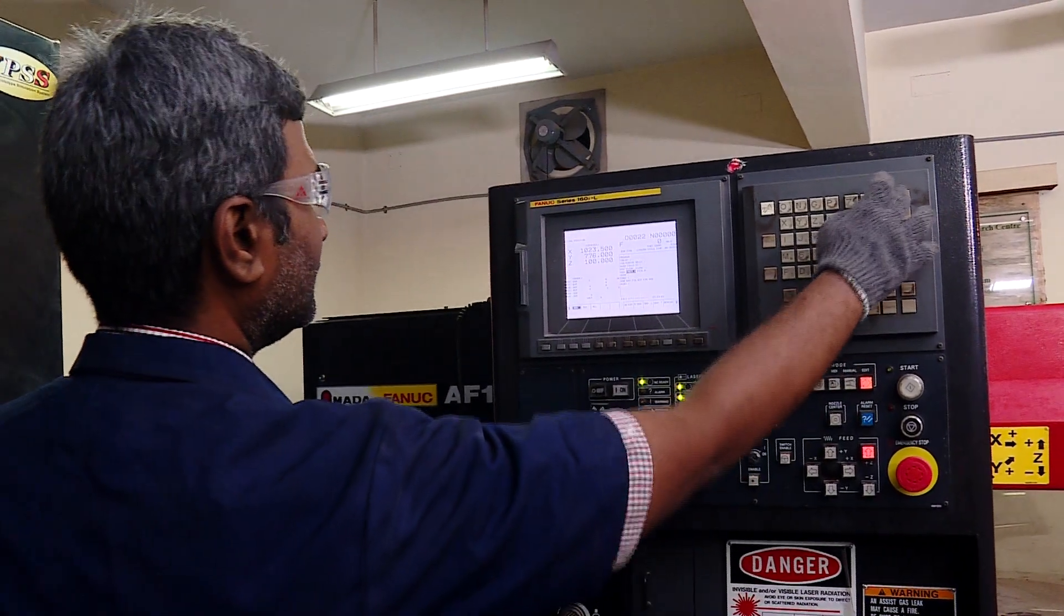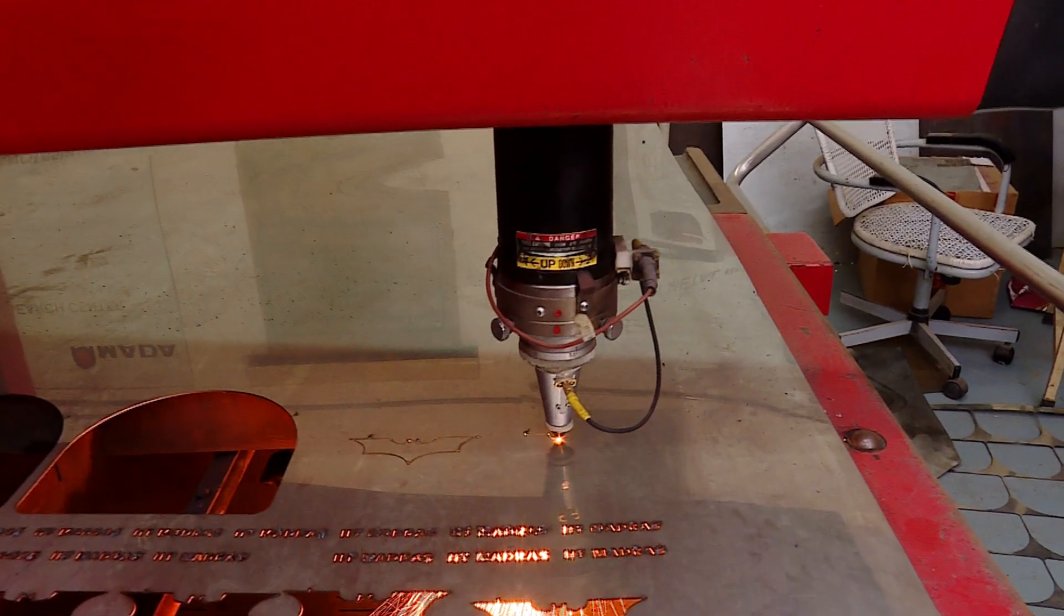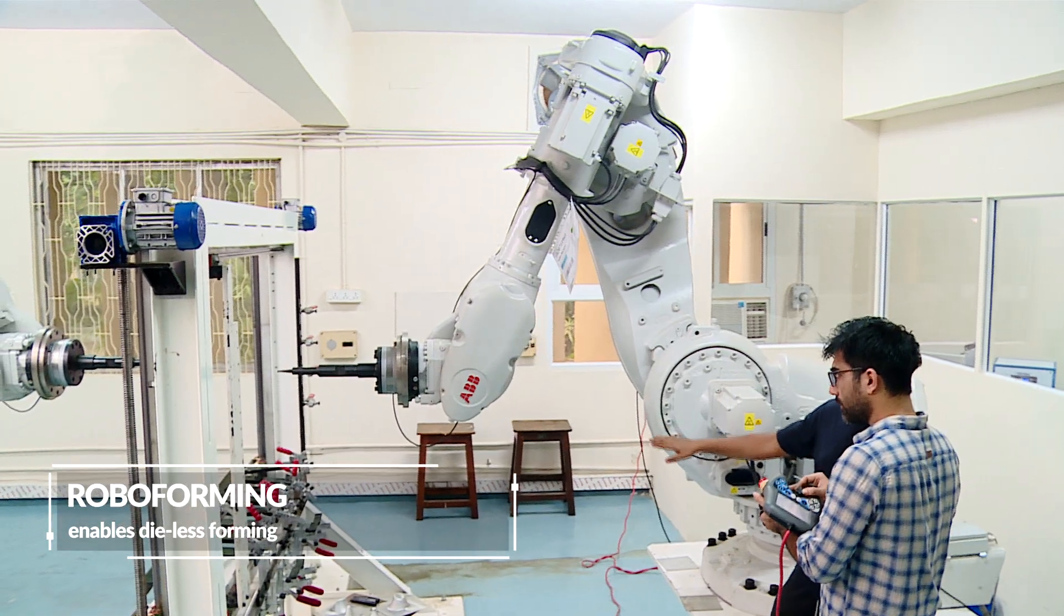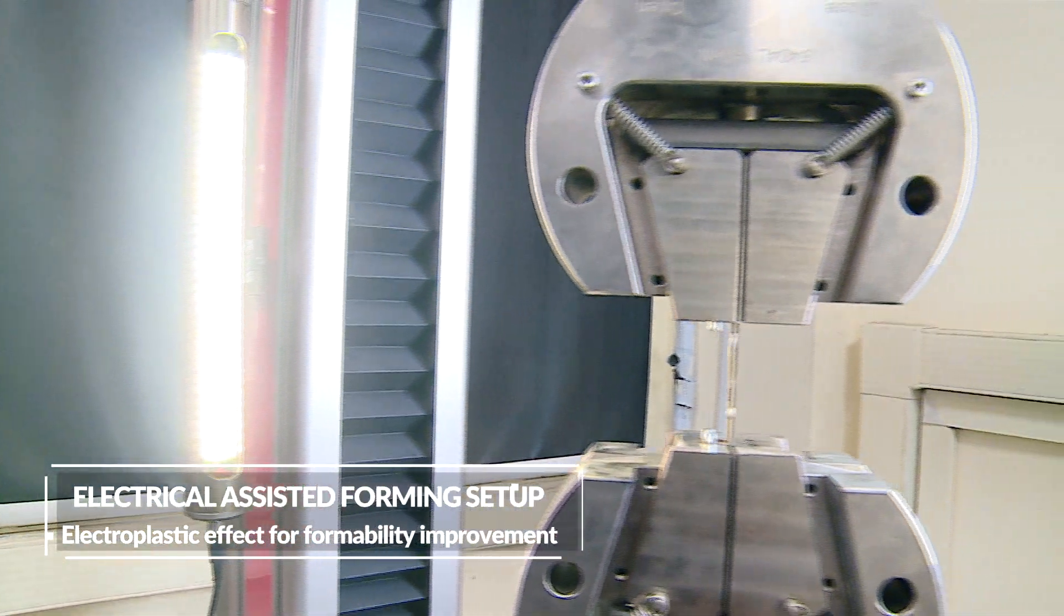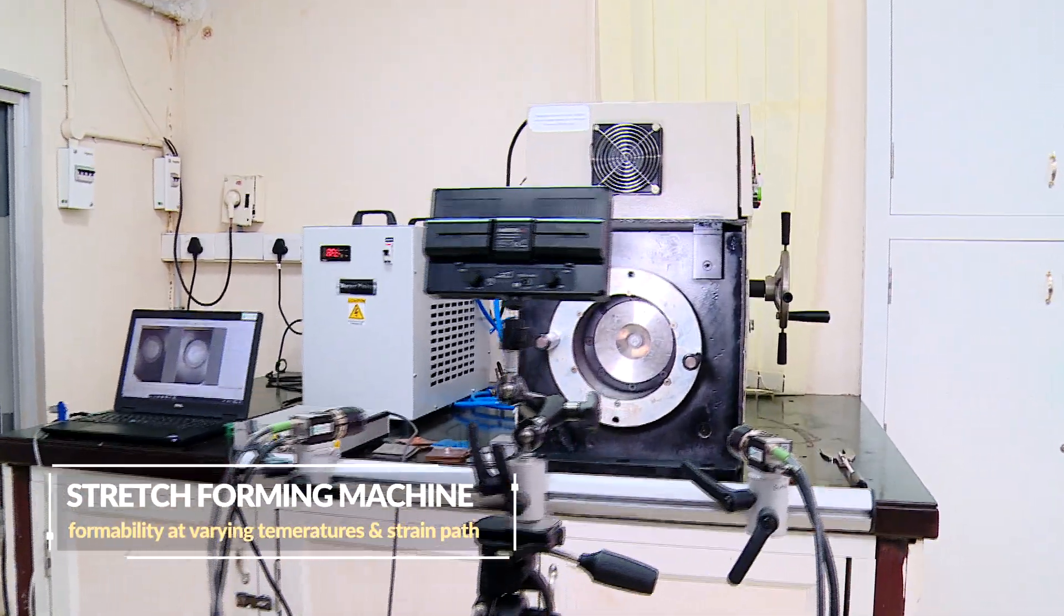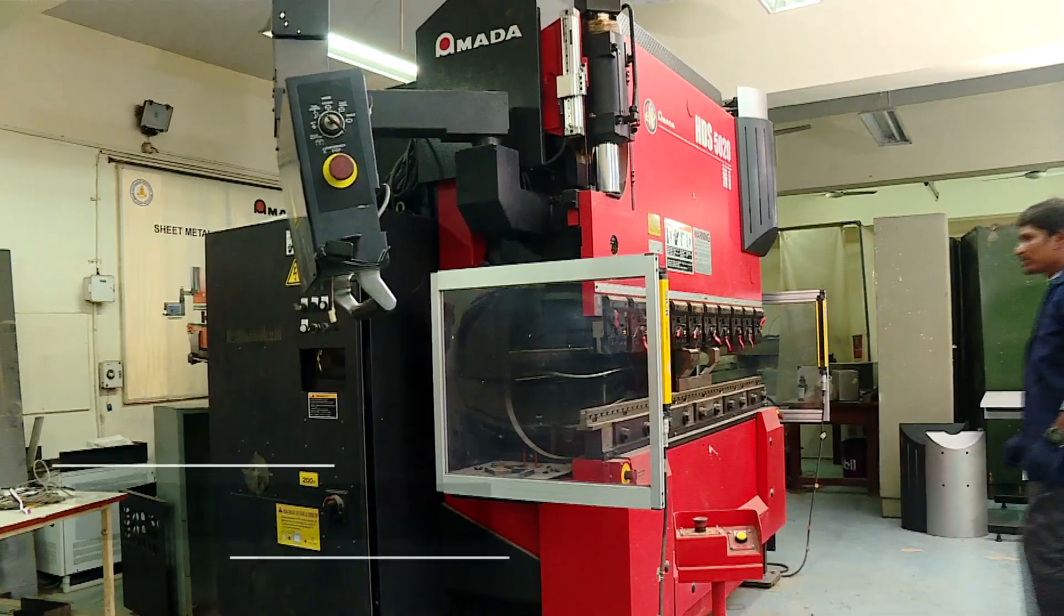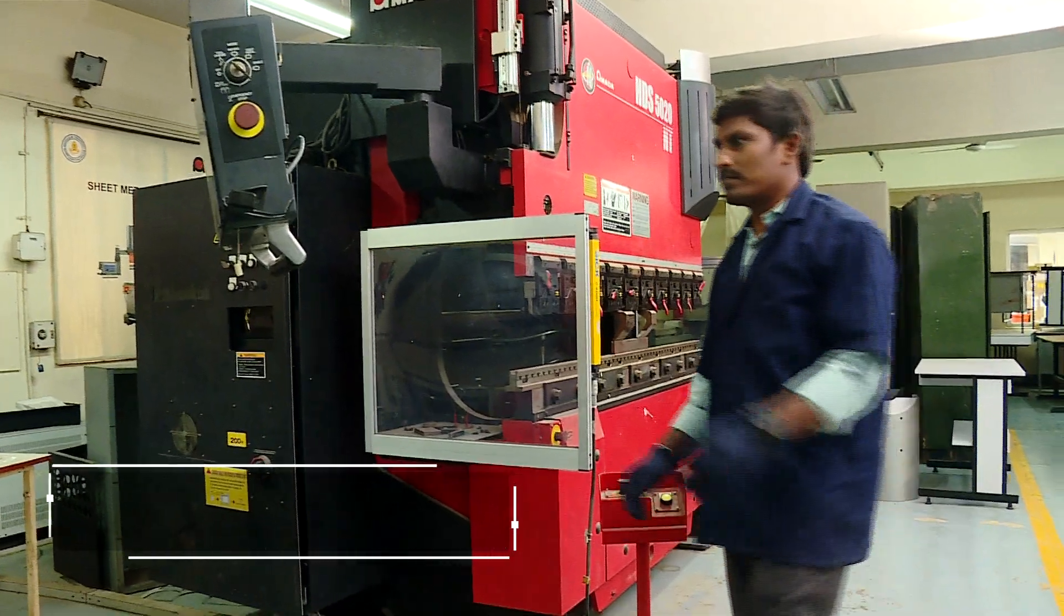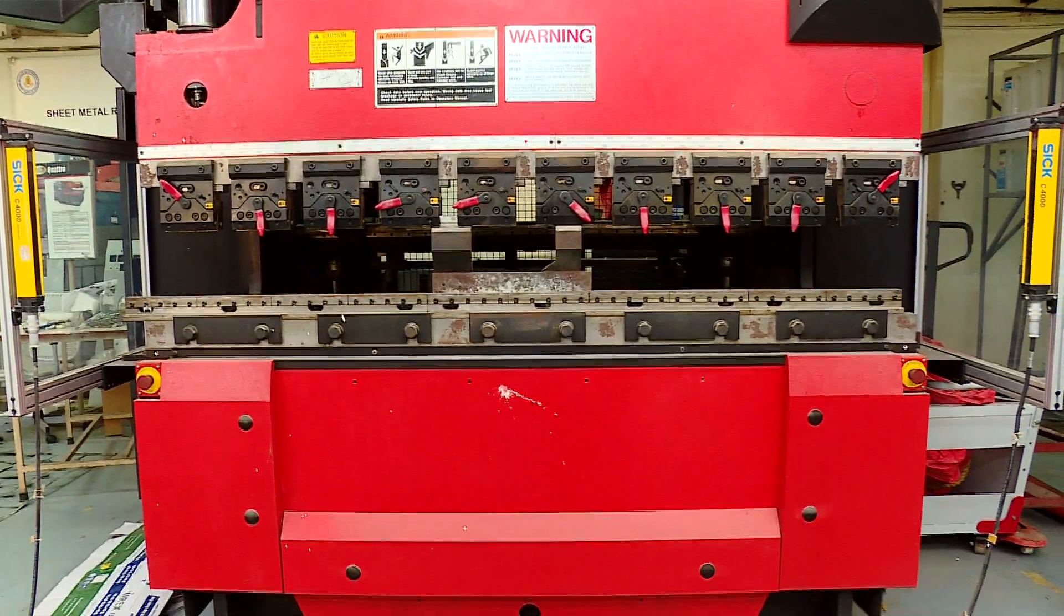The sheet metal forming group is actively involved in research and development of alternate processes for improved formability of materials. A few of the advanced facilities established by this group are Roboforming that enables die-less forming of commercial sheet components, Custom Electrical Assisted Forming Setup to evaluate electroplastic effect for formability improvement, Custom designed patented stretch forming machine to evaluate formability at varying temperatures and strain rates, and Amada sheet metal forming facilities for research activities on precision sheet metal forming of metallic and non-metallic materials with highly precise geometries and angles with high flexibility with 9 axes.